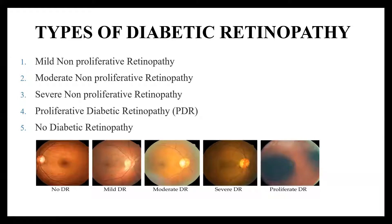The stages of non-proliferative and proliferative diabetic retinopathy are as follows. The first stage is mild non-proliferative retinopathy, the earliest stage, caused by swelling in the blood vessels of the retina. The second stage is moderate non-proliferative retinopathy, caused by increasing swelling of tiny blood vessels that start to interfere with blood flow to the retina. The third stage is severe non-proliferative diabetic retinopathy, where a larger section of blood vessels in the retina become blocked, causing a significant decrease in blood flow.